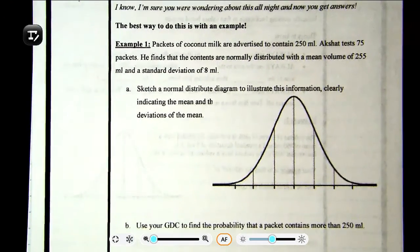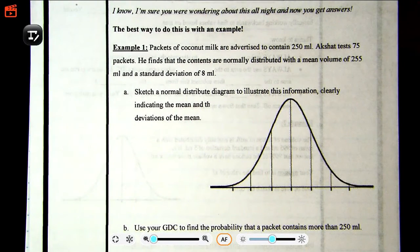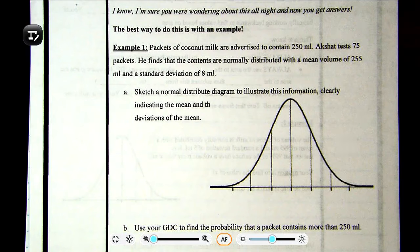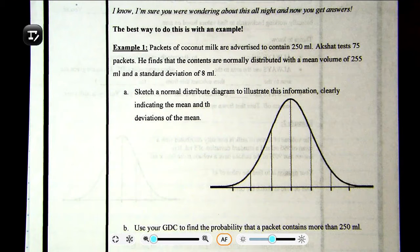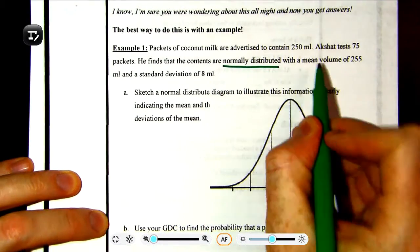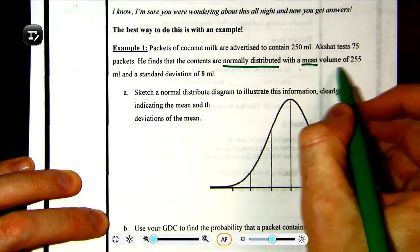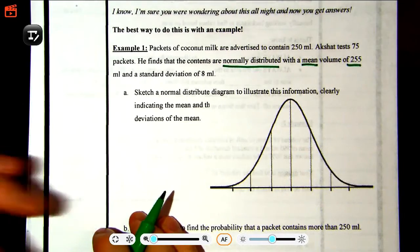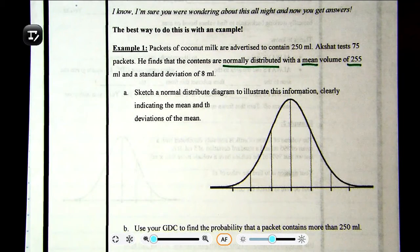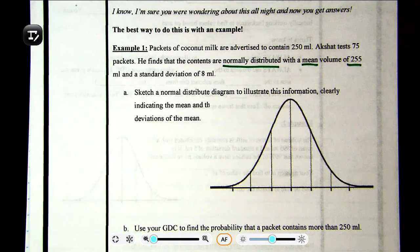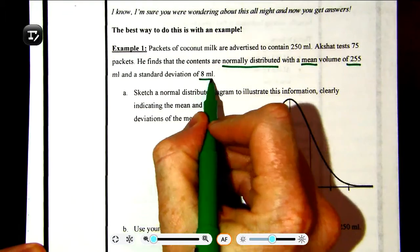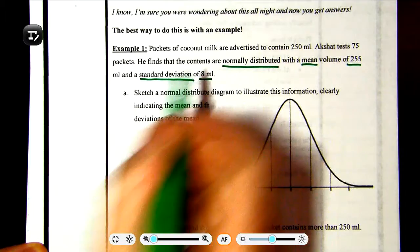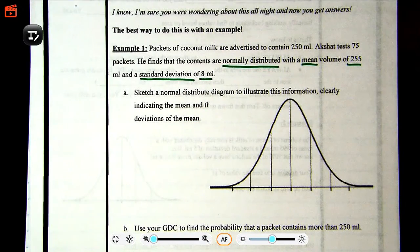Example 1: Packets of coconut milk are advertised to contain 250 milliliters. Akshat tests 75 packets. He finds the contents are normally distributed with a mean volume of 255 milliliters and a standard deviation of 8 milliliters.